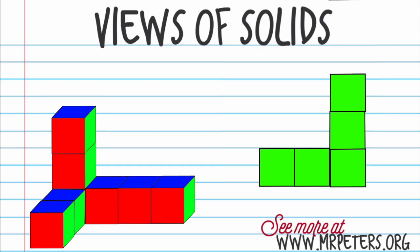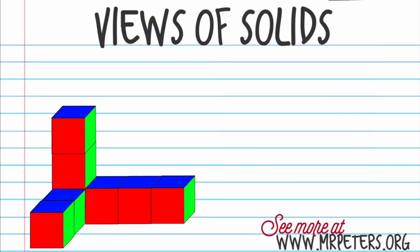We have one more view, and that would be the top view using the blue. With the top view, we're standing up here. Think of it as we're going over a helicopter, and we're looking down upon what we would see. We can't see the red or the green. We only see the blue.